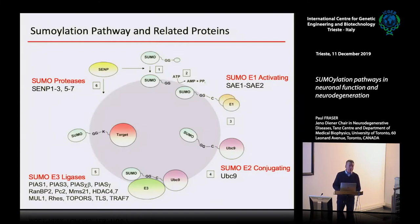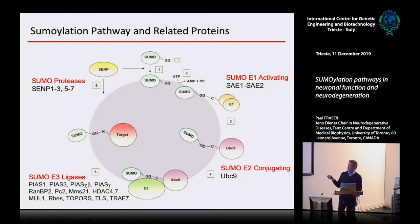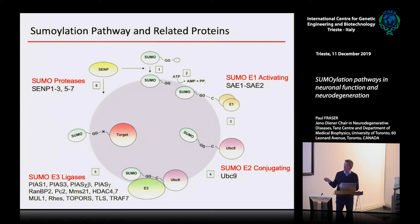Similar to ubiquitin, SUMO goes through a recycling process, but with much less complexity than ubiquitination. The SUMOs get activated by cleavage at the C-terminus by a group of proteases called SENPs. Once cleaved, it gets activated by the E1, of which there are only two. The big gatekeeper is the E2 ligase — in ubiquitination there are more than 100 E2 ligases, but in SUMOylation there's only one: UBC9. That is the one that esterifies and then transfers it to the E3 ligases, which are the ones that confer target specificity.